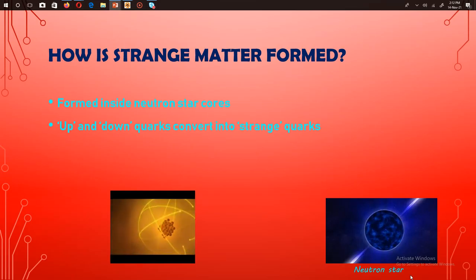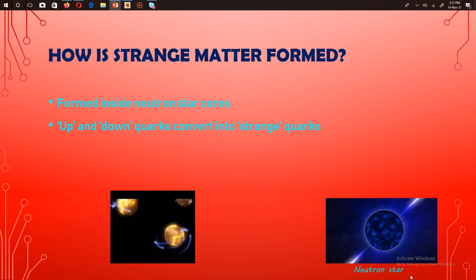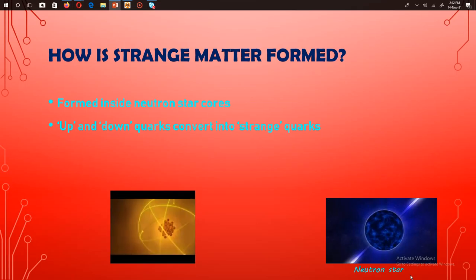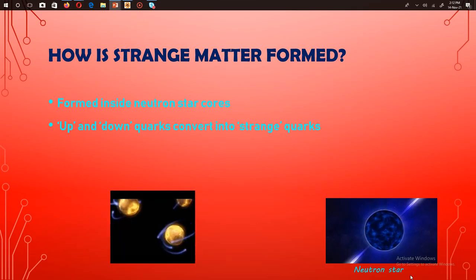Up, down and strange quarks are basically types of quarks. Up and down quarks form protons and neutrons and other kinds of hadrons which make up normal matter. Strange quarks create strange matter.